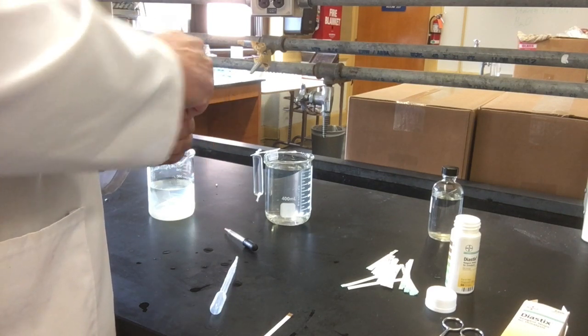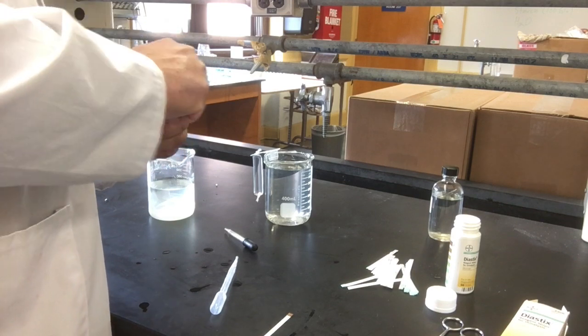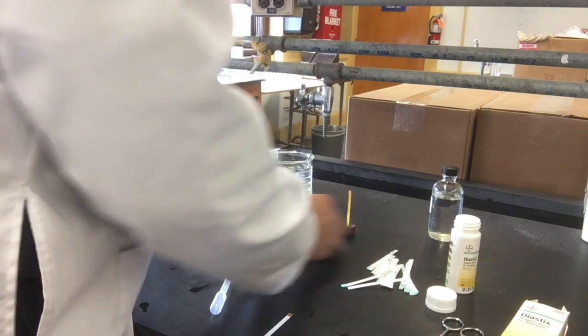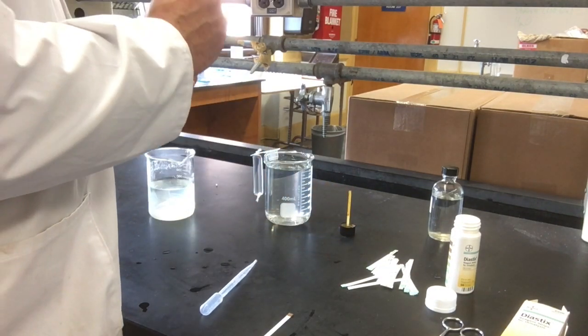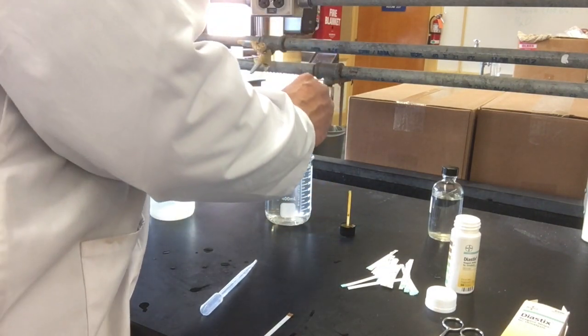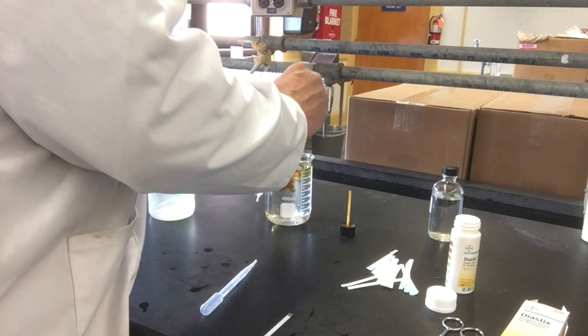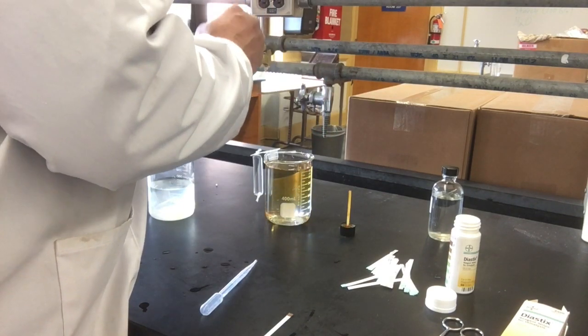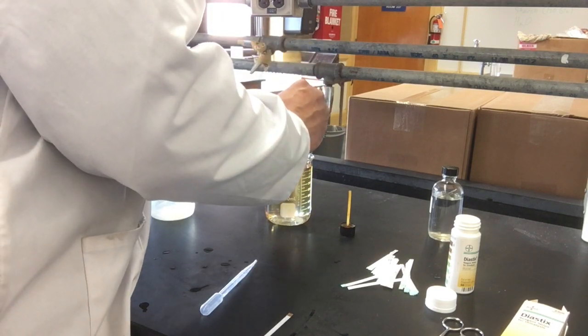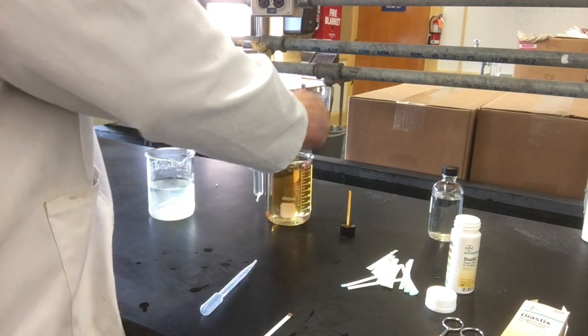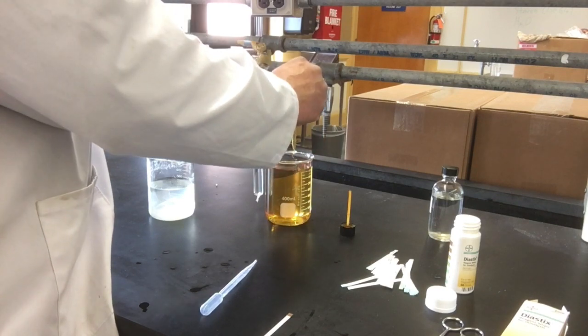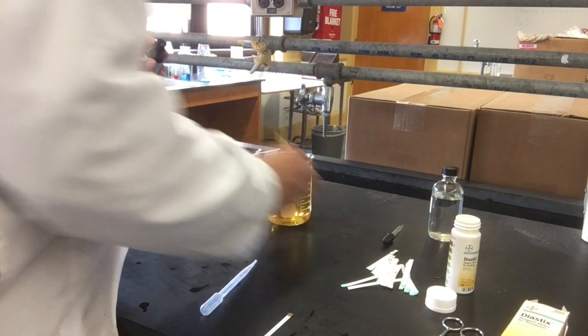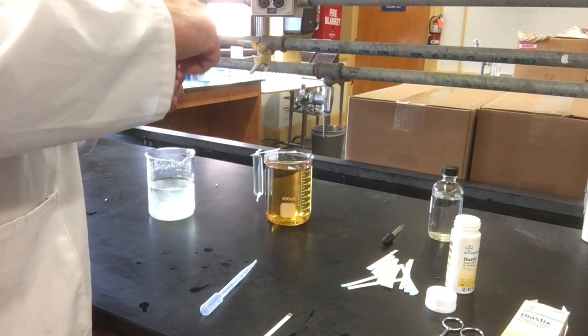Iodine binds to starch and turns color. I'll use a glass eyedropper to add iodine until the water is a light tea color. That's good. I'll put the cap back on to avoid spills.